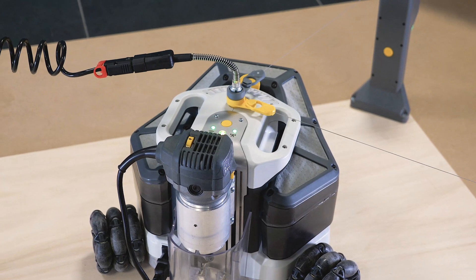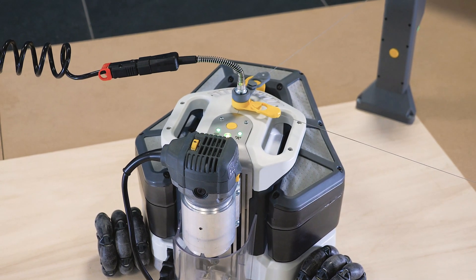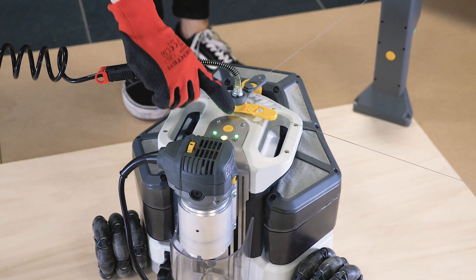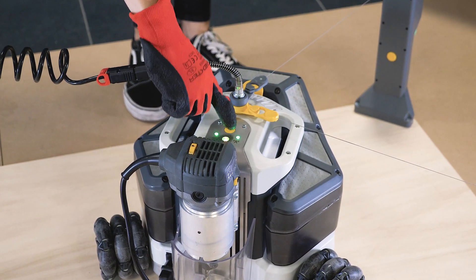Once you set the speed, the bit is mounted, and the spindle protection is installed, you can press the Goliath status button on the top of the robot to proceed to the calibration of the z-axis.